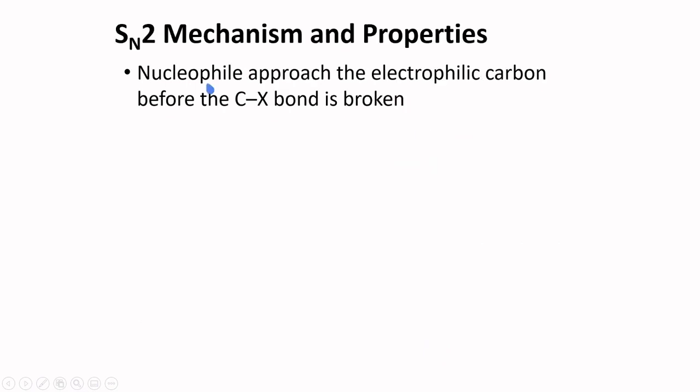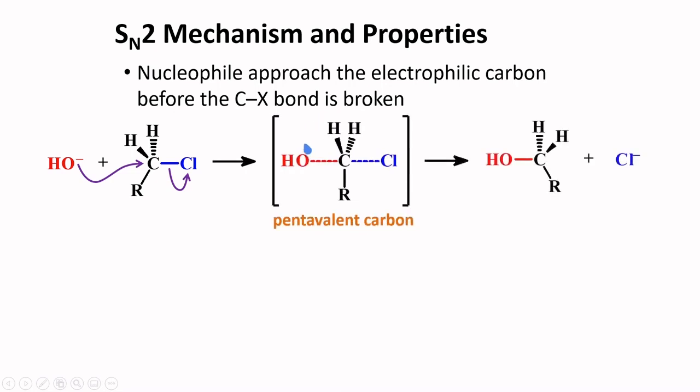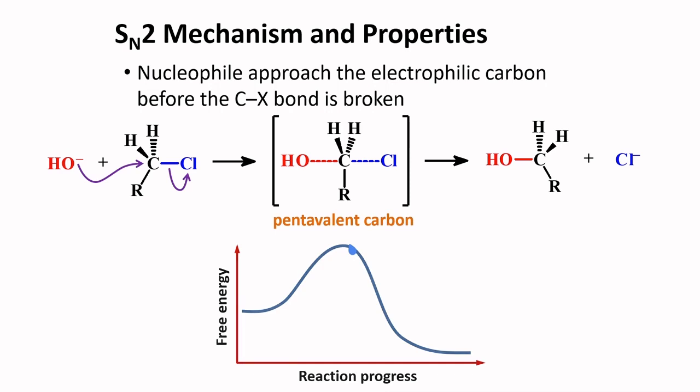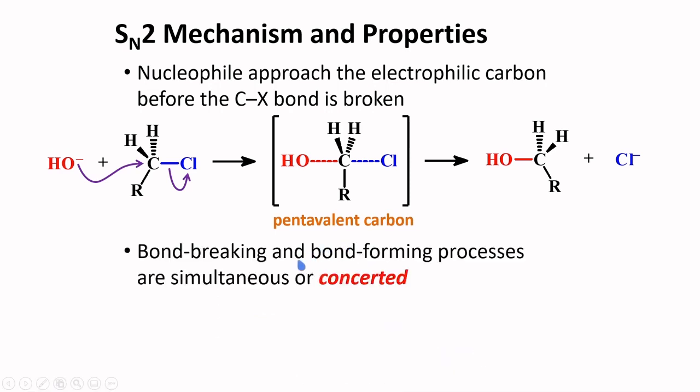Another nucleophilic substitution is possible. We call it SN2. Here, the nucleophile approaches the electrophilic carbon before the C-X bond is broken, to produce a pentavalent carbon at the transition state. As you will notice, this reaction is only one step. Bond breaking and bond forming processes are simultaneous or concerted.